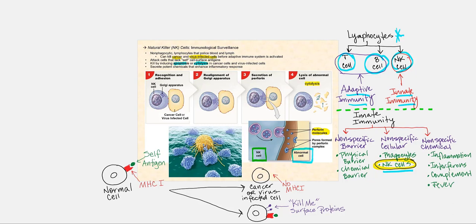Natural killer cells are important in immunological surveillance. What that means is they will monitor blood and lymph, looking for anything that shouldn't be there. Keep in mind these cells are non-phagocytic and are one type of lymphocyte.